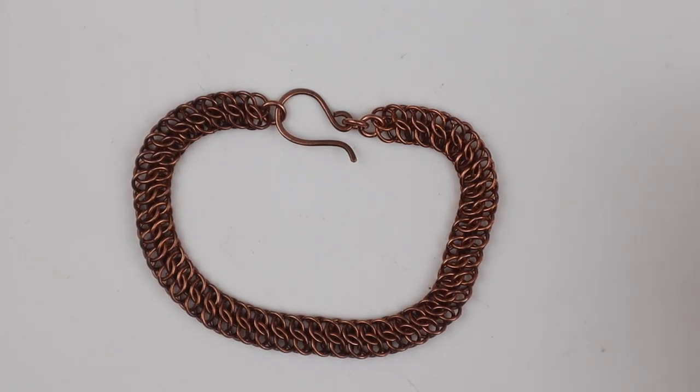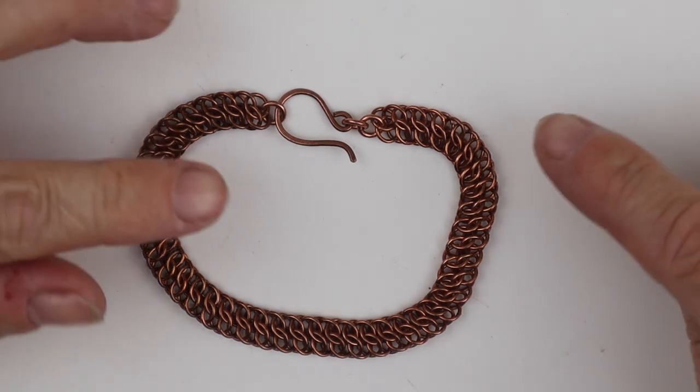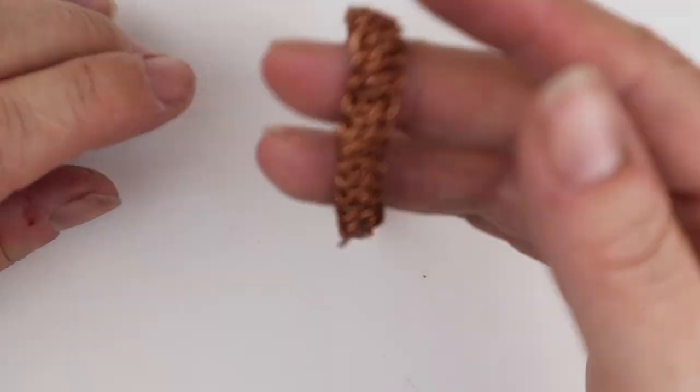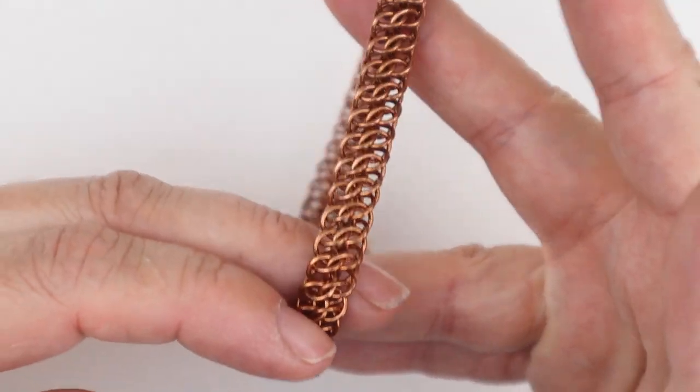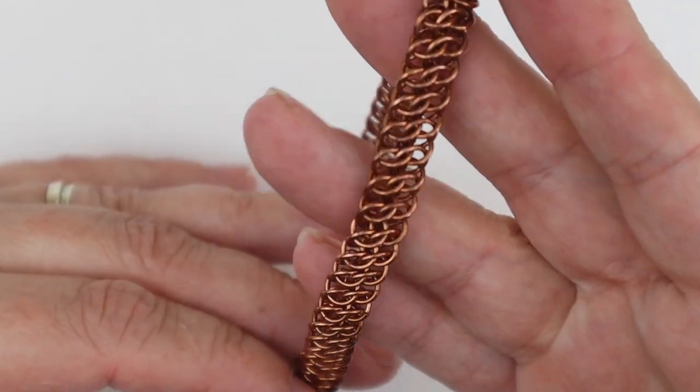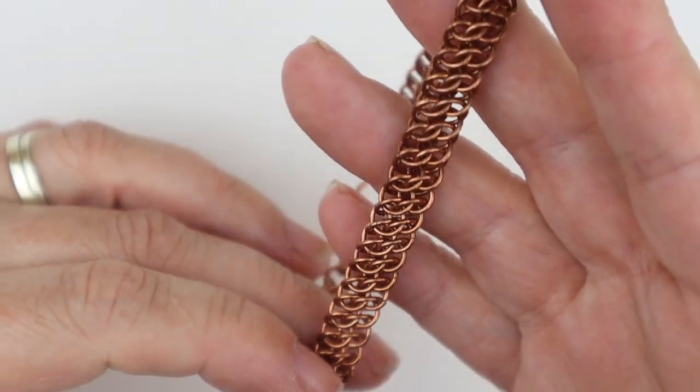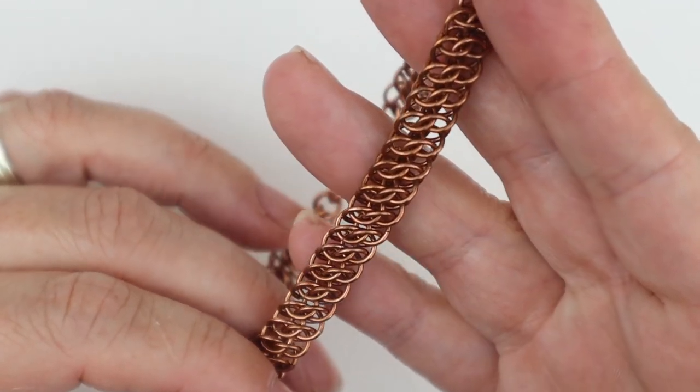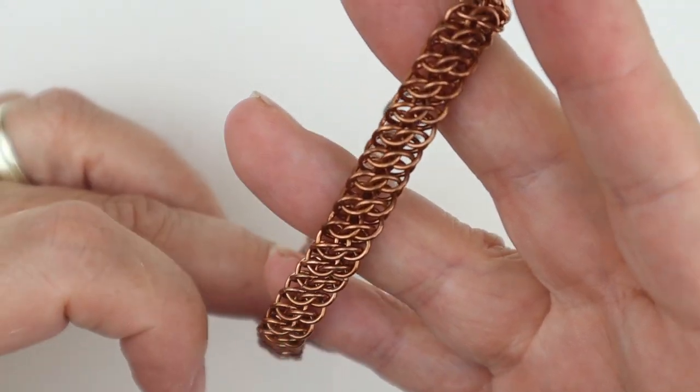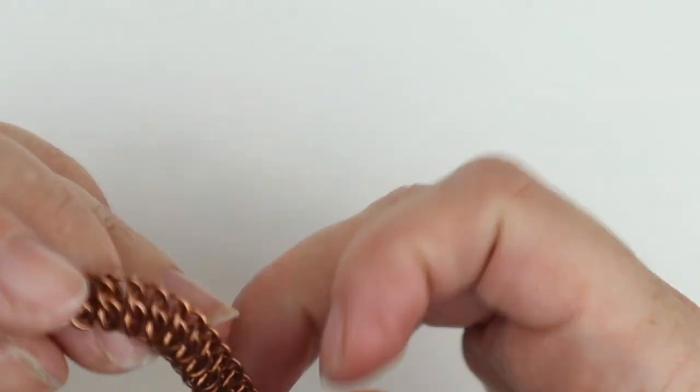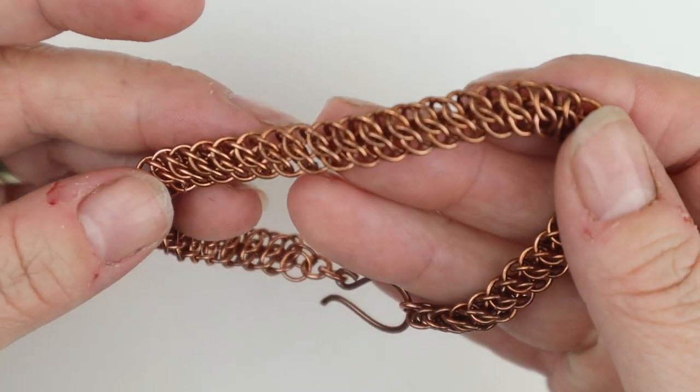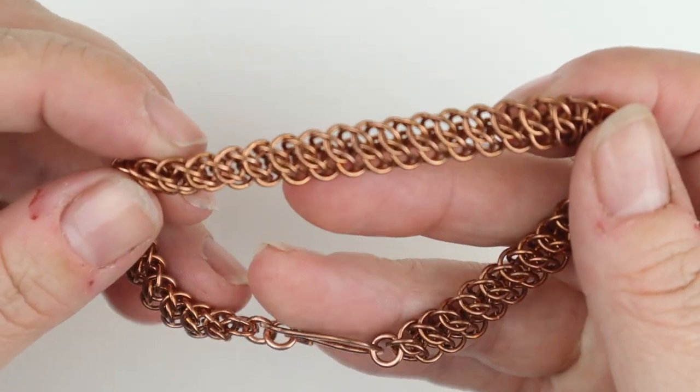Hello everyone, welcome back to the Rocks and Chains YouTube channel. My name is Floe Hastings and today I'm going to show you how to make this beautiful weave called GSG, or to give it its full title, Great Southern Gathering. This is part of the Persian weave family and it's very closely related to two other weaves called Arkham and Viper Scale.